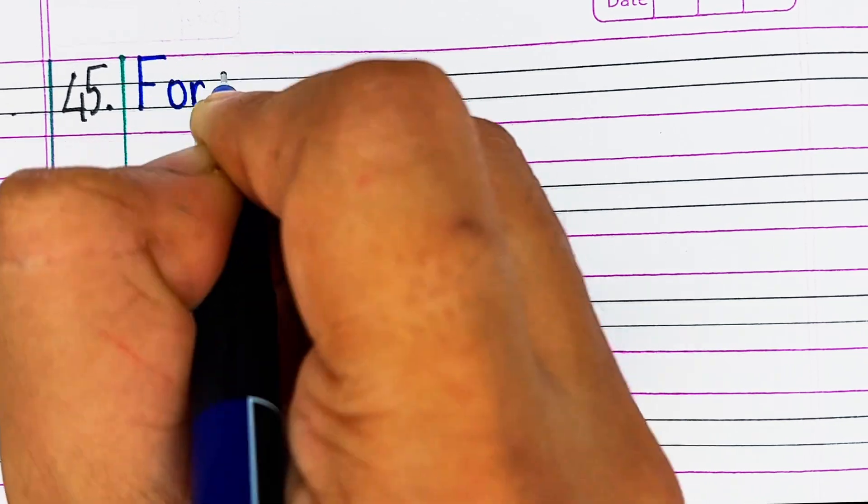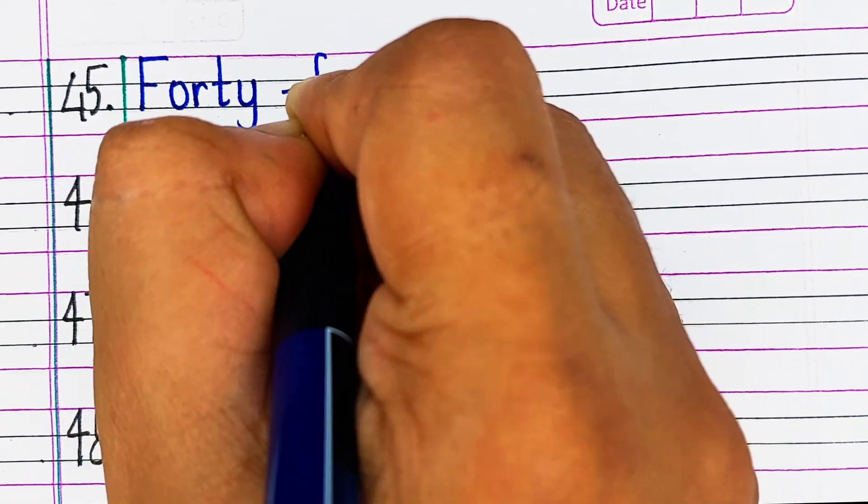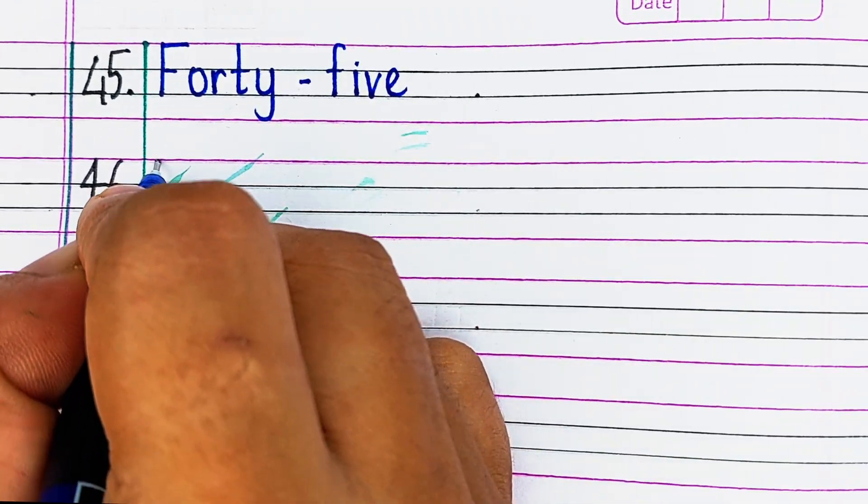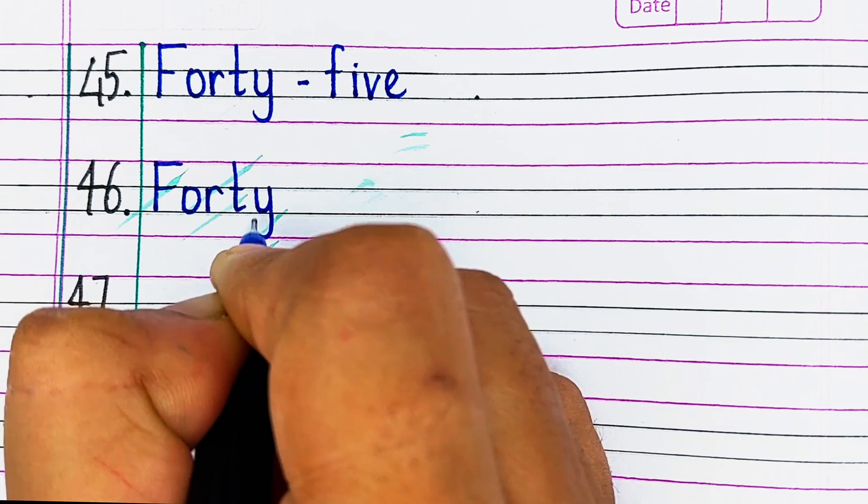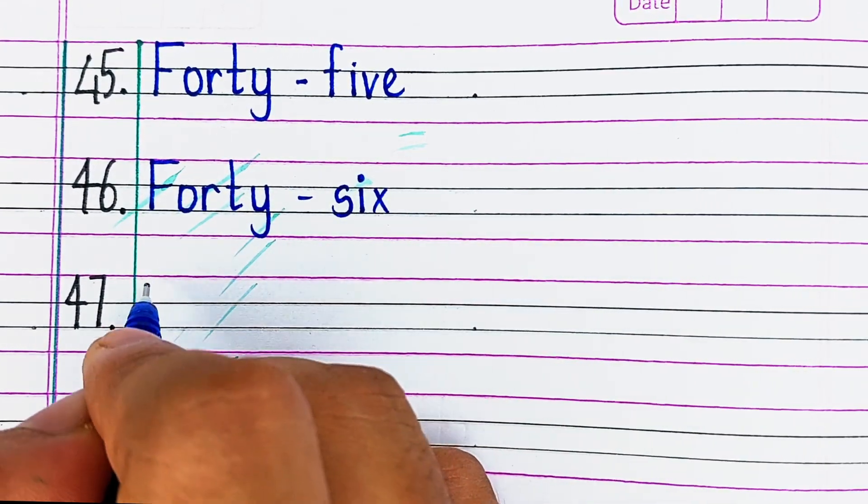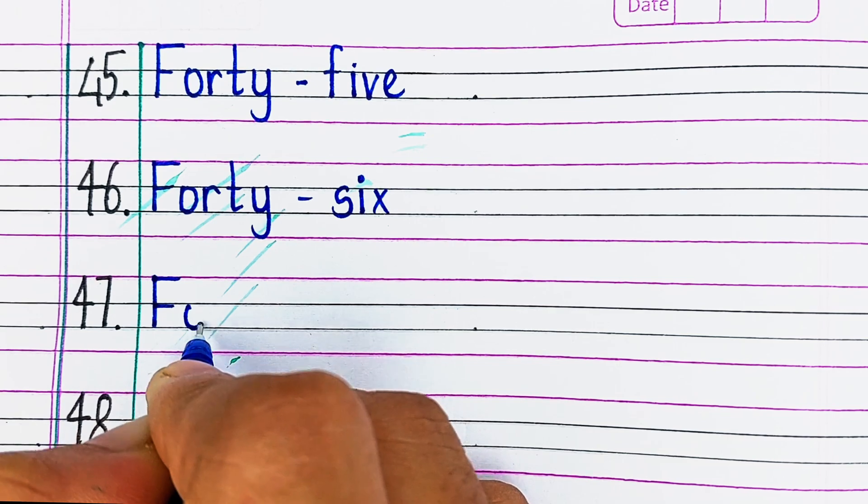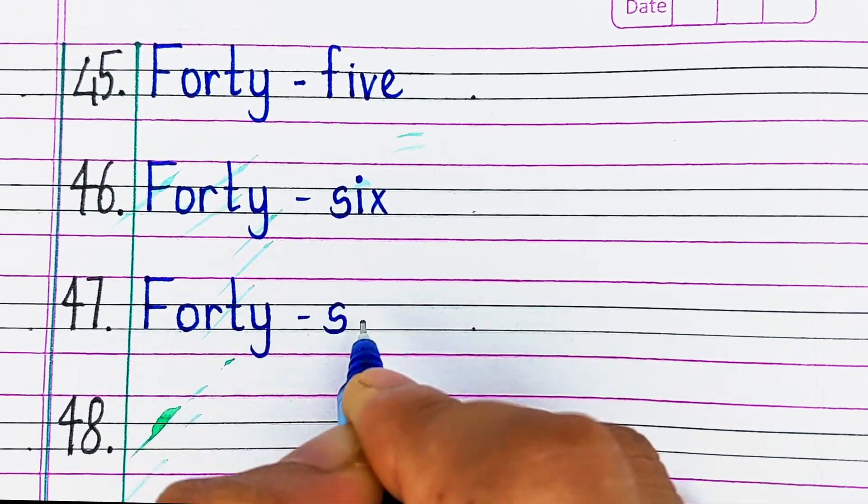Next, F-O-R-T-Y-F-I-V-E, 45. Next, F-O-R-T-Y-S-I-X, 46. Next, F-O-R-T-Y-S-E-V-E-N, 47.